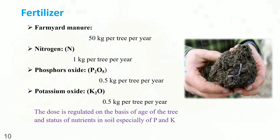Fertilizer application. Farm yard manure: 50 kg per tree per year. Nitrogen: 1 kg per tree per year. Phosphorus oxide: 0.5 kg per tree per year. Potassium oxide: 0.5 kg per tree per year. The dose is regulated on the basis of age of the tree and the nutrient status of the soil, especially of P and K.